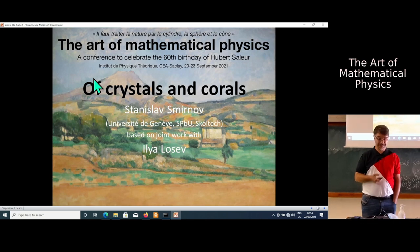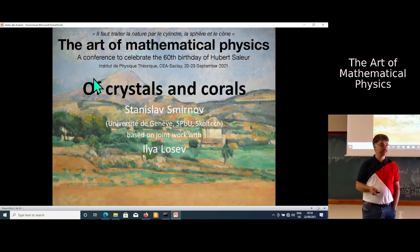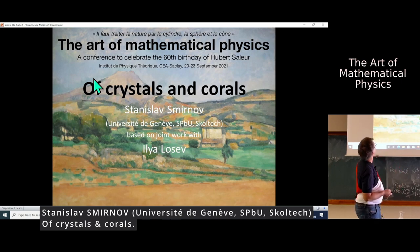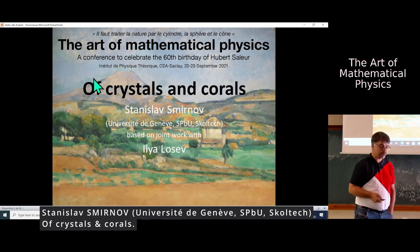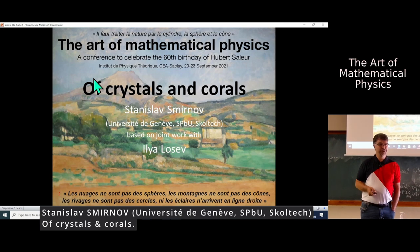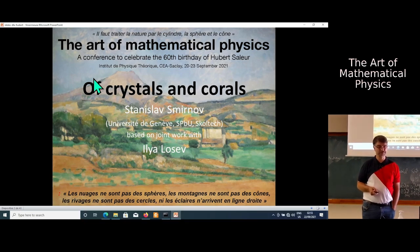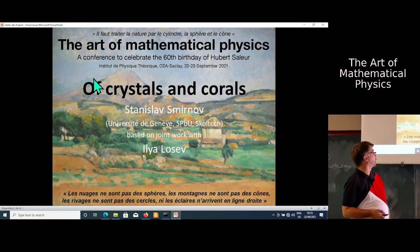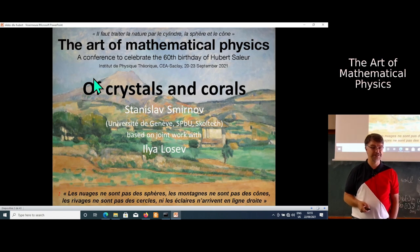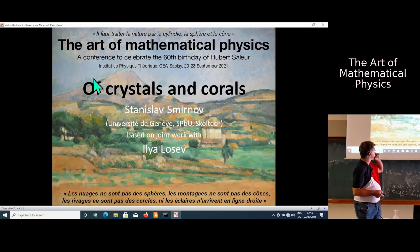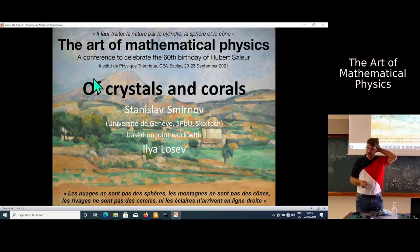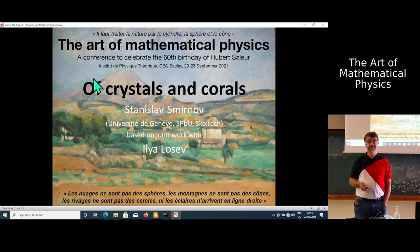It's a great pleasure to be here. Yesterday when preparing the slides, I looked at the poster with a well-known quote from Cezanne above. I couldn't resist putting down the quote that we should treat nature with a cylinder, sphere, and cone. I also put a quote from Benoit Mandelbrot from his first book on fractals, saying that clouds are not spheres, mountains are not cones, rivers don't flow in arcs of circles, and lightning doesn't go in a straight line.